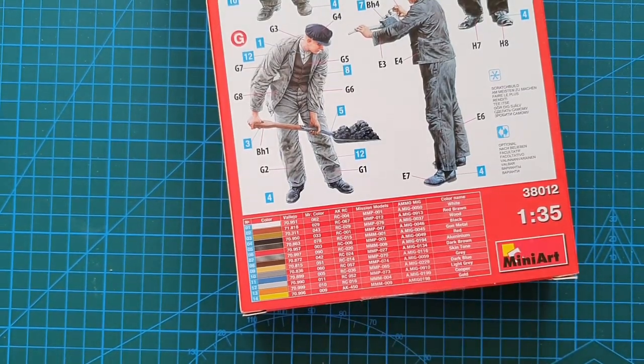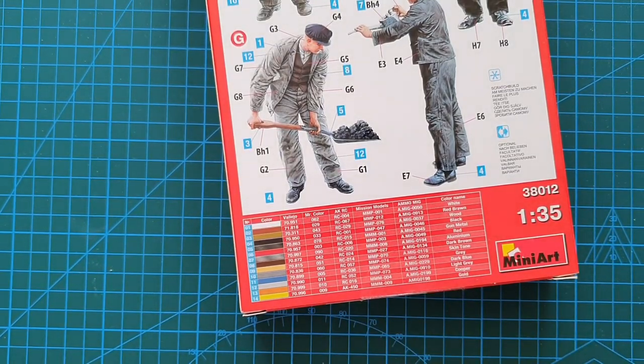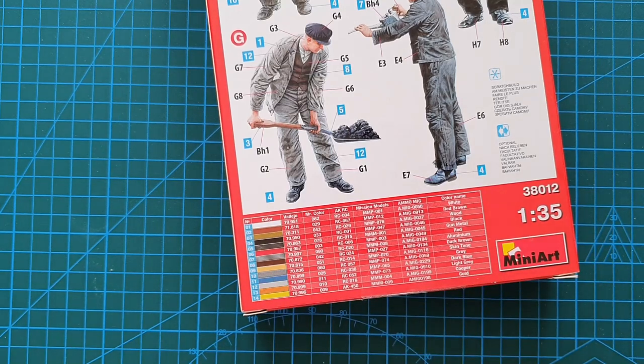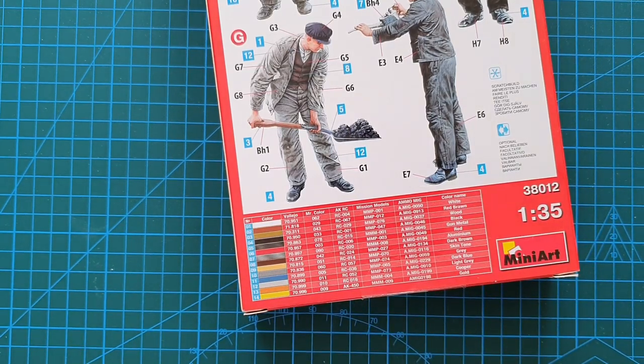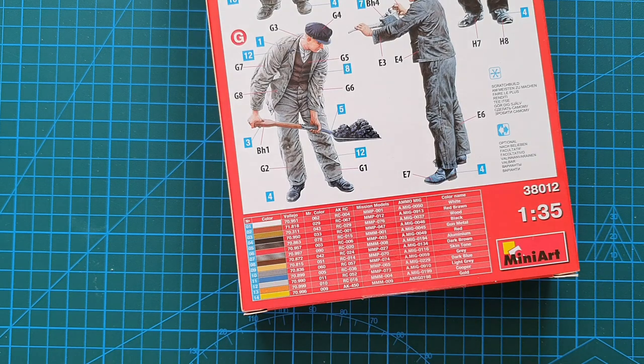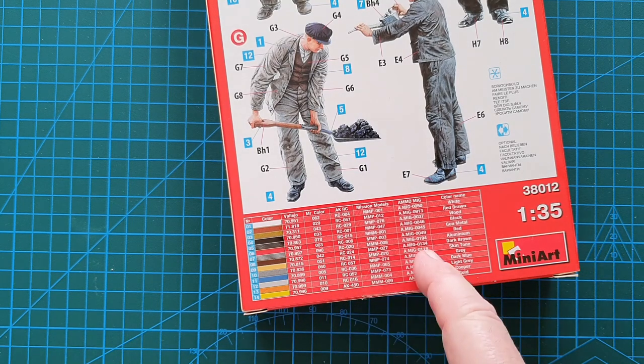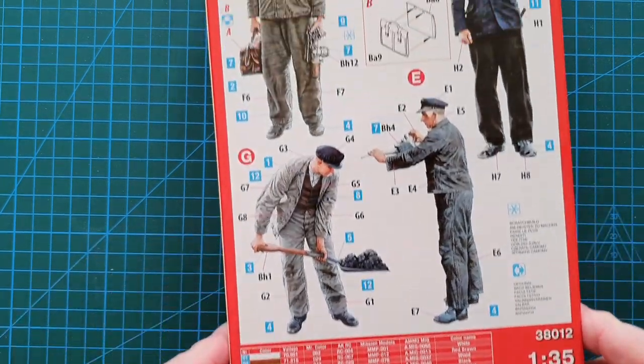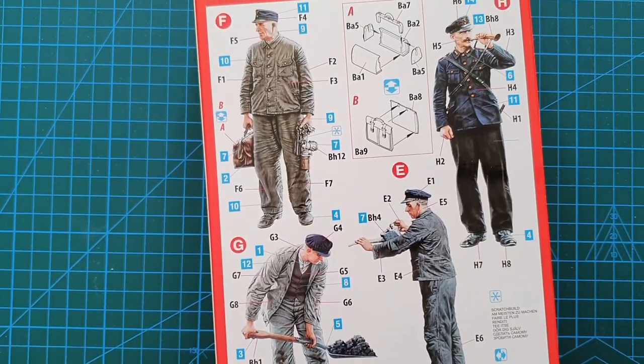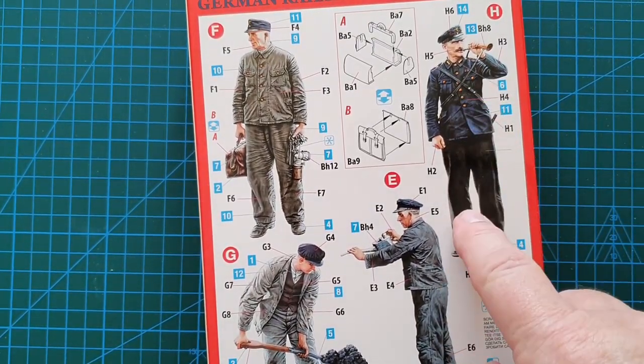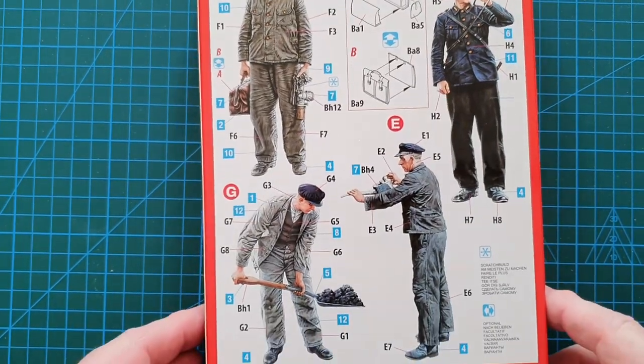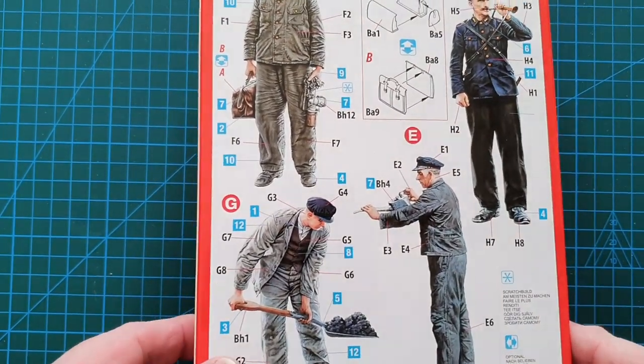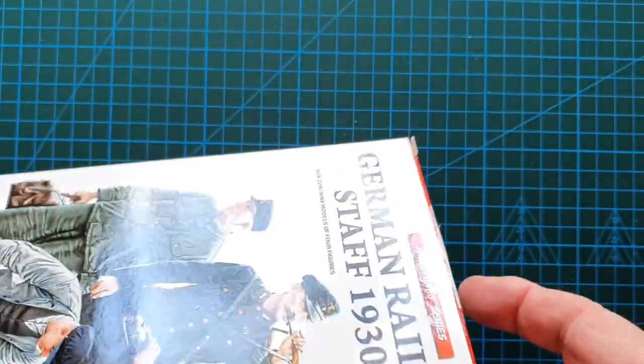Down here you've got your usual MiniArt list of paint suppliers and all the different colors that you can use - fairly straightforward. I do like the way MiniArt puts that in, not just one supplier but a range that covers most modelers' stocks. This is the guard, he's blowing his little trumpet, and it's a fairly straightforward build.